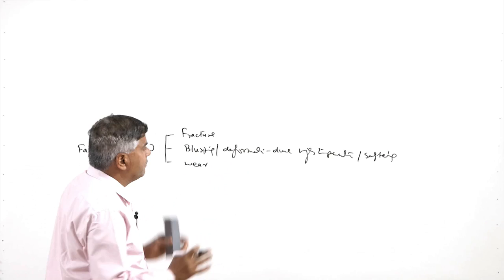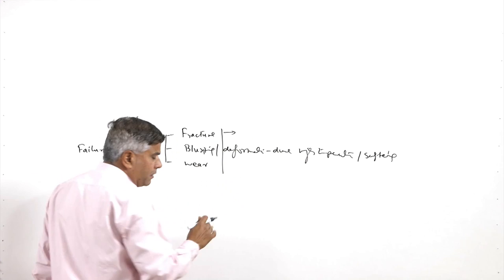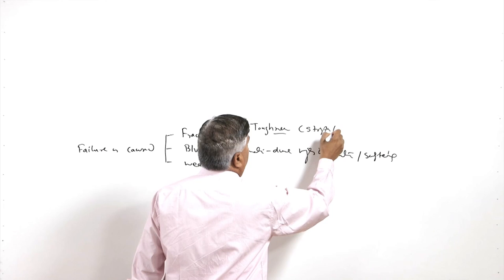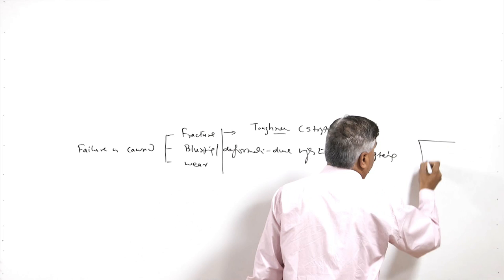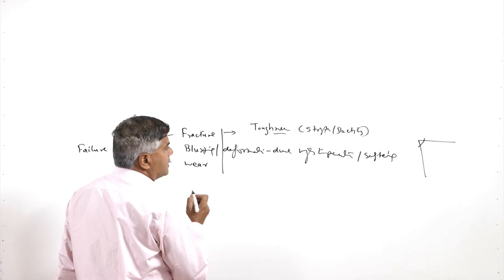Since these three factors usually cause tool failure, if we have to make a tool of a particular material we need to look for specific properties. To avoid fracture, it is important that the tool material has the desired toughness, which is a combination of strength and ductility. It helps to absorb loads and impacts and so avoids any sudden catastrophic fracture of the cutting edge.